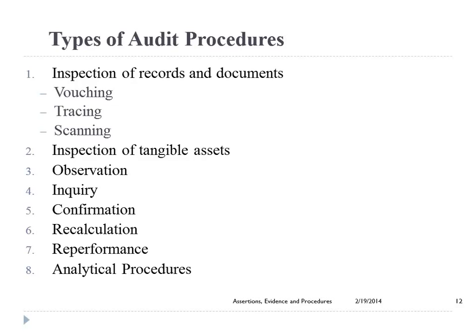Analytical procedures can only say there's a problem or there is no problem — these accounts look good, the relationships are going in my expected direction. And during the completion phase, analytical procedures are also required — it's like a hindsight check. Now I have more information because I planned and carried out the audit and collected evidence. I want to see: does it all make sense? Do I feel I have gathered sufficient, appropriate evidence to support my opinion? Is there anything that just doesn't make sense? So analytical procedures are only required during those two phases, but can be performed during the evidence collection phase.